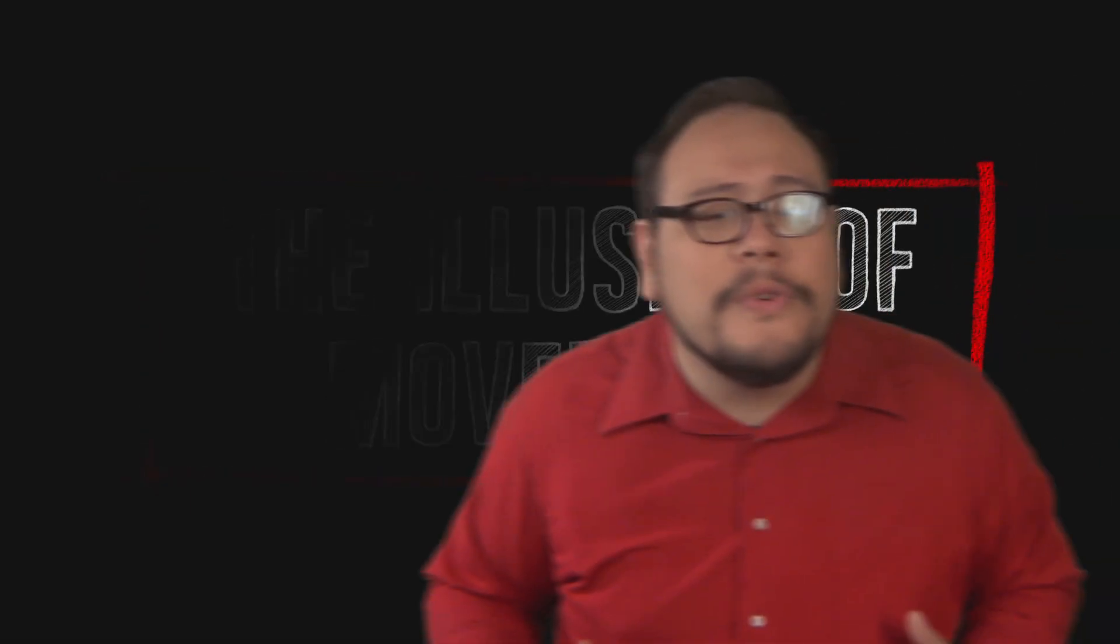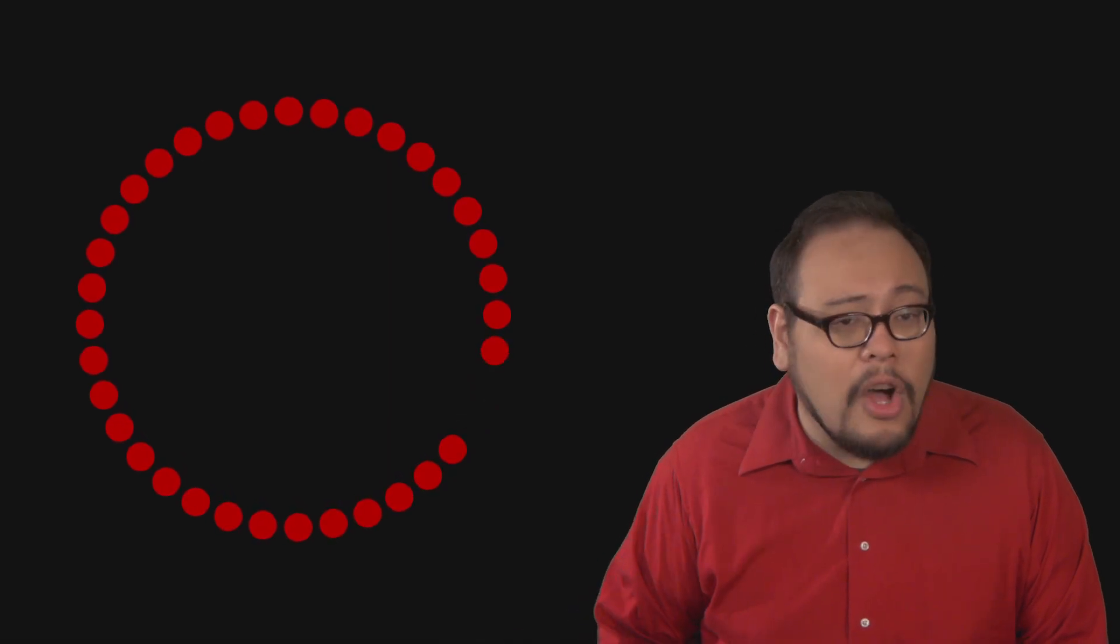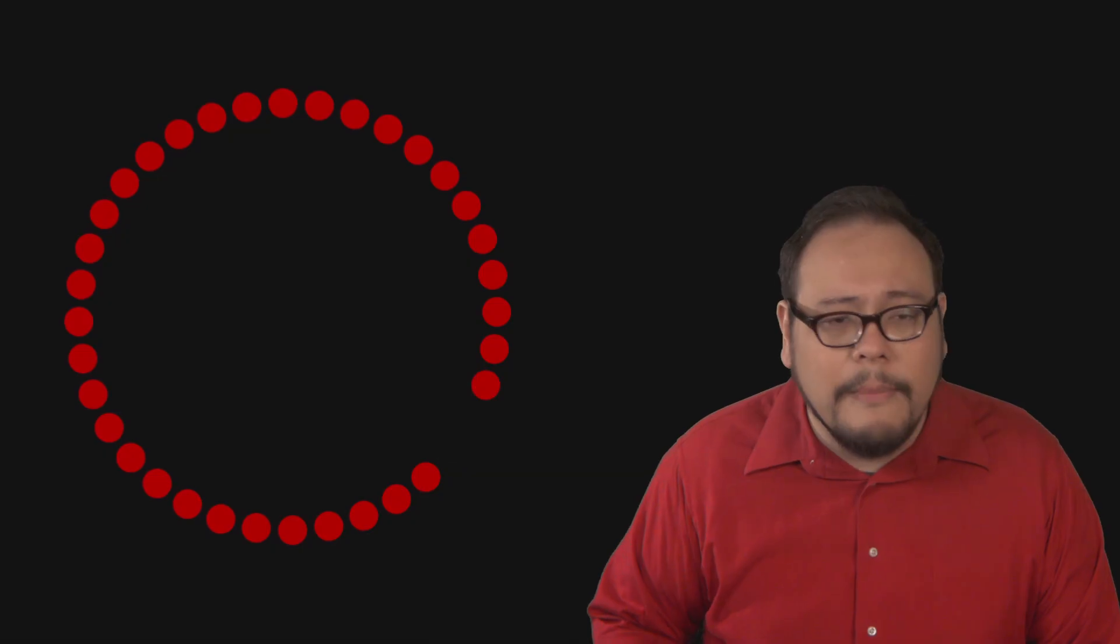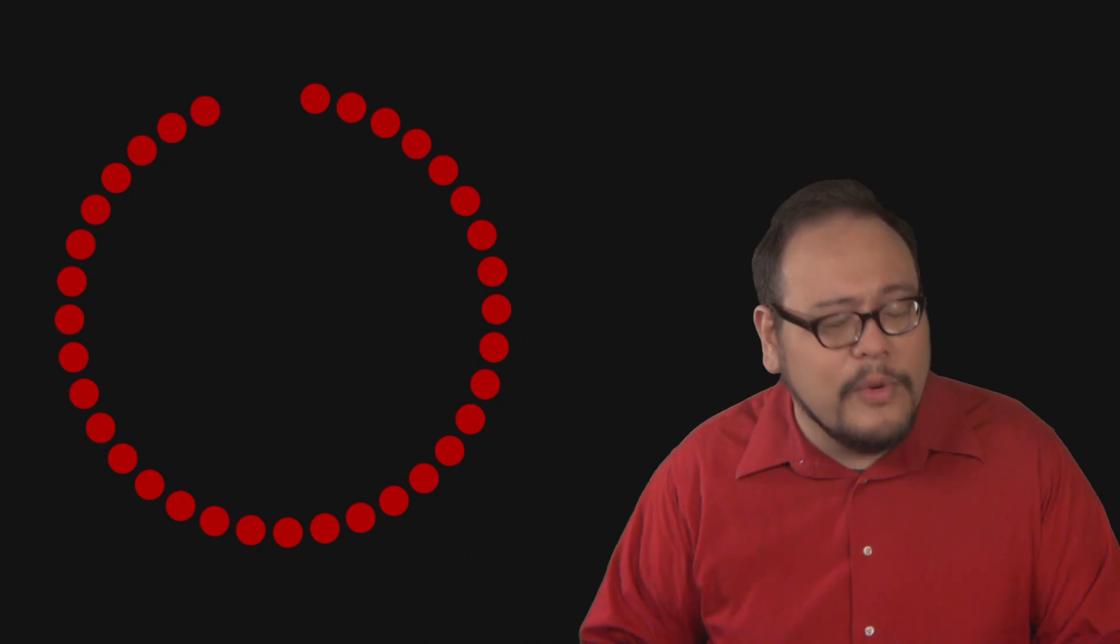Let's establish a basic truth about film. Nothing in the movies is real. The sets are fake, the actors are pretending and reciting lines written for them. Even the very essence of moving pictures is a lie. There's nothing moving. It's all an optical illusion. Take for instance this spinning wheel of circles. It looks like it's moving in a clockwise direction. But if we compare each frame of this animation, we see that actually nothing is moving at all.